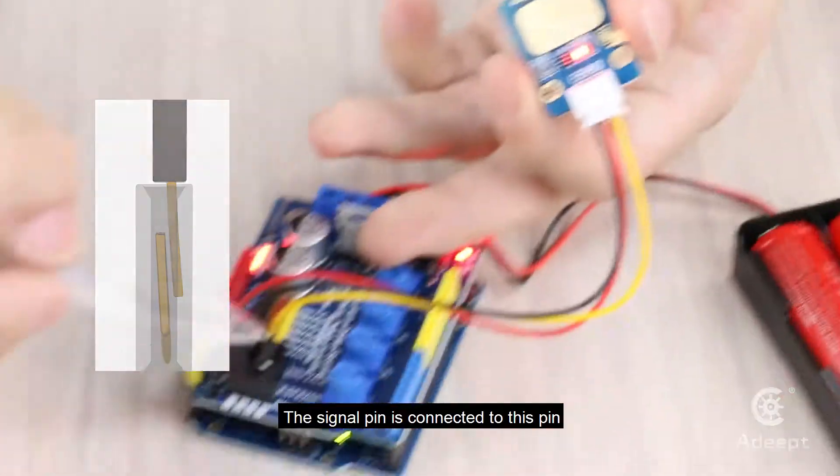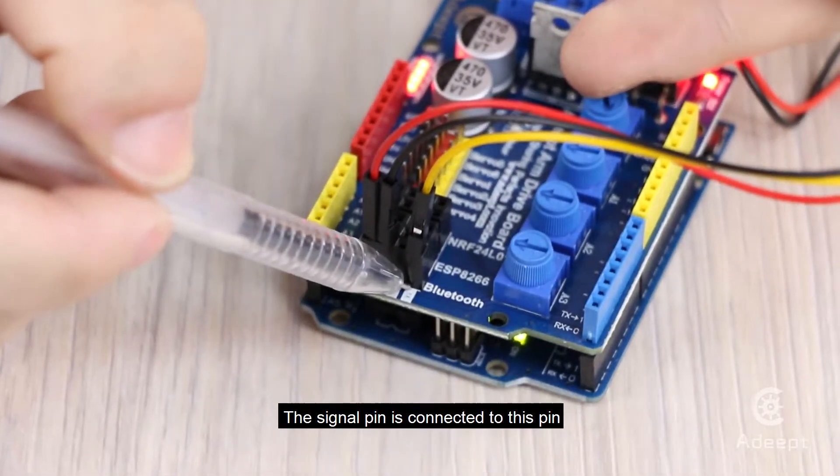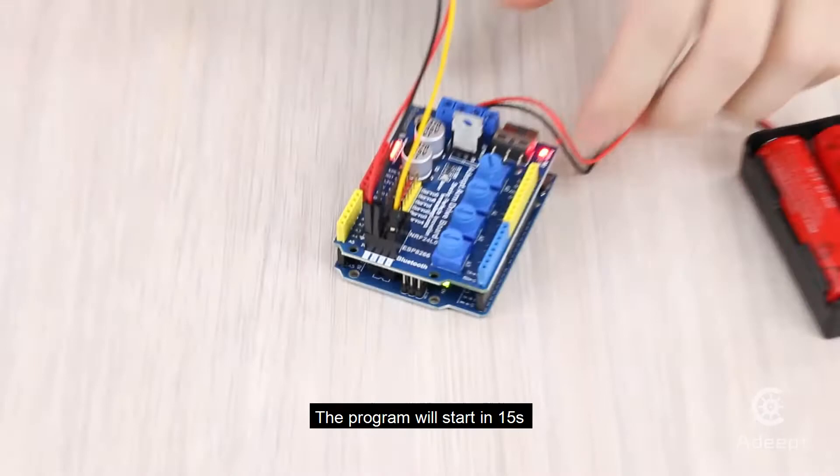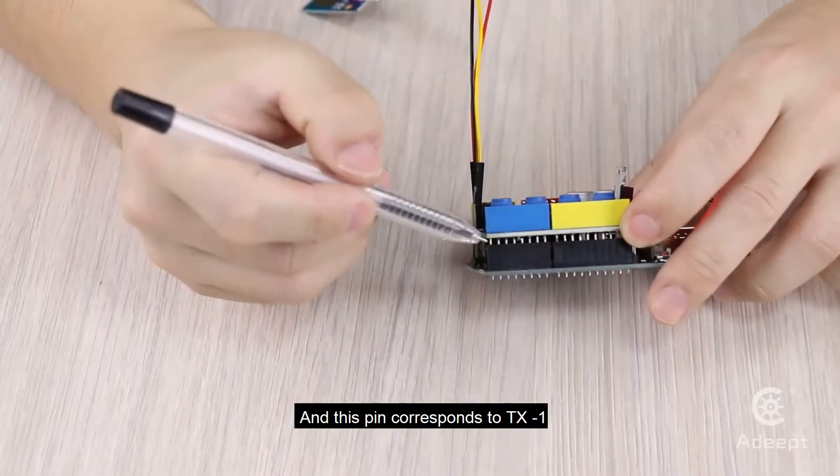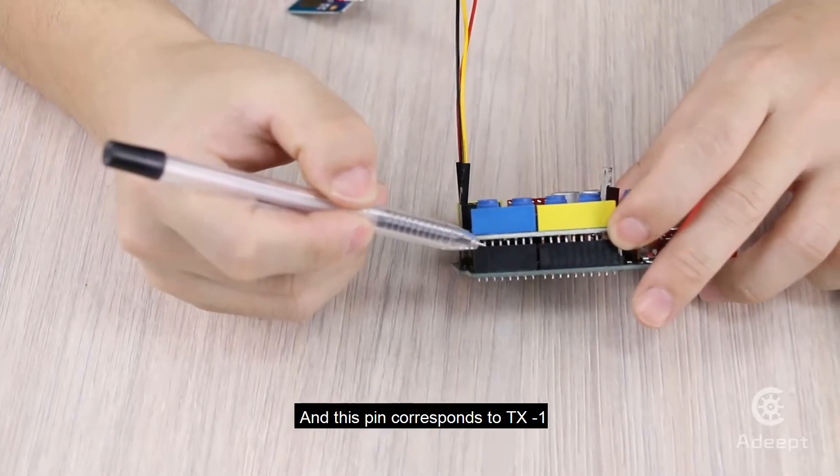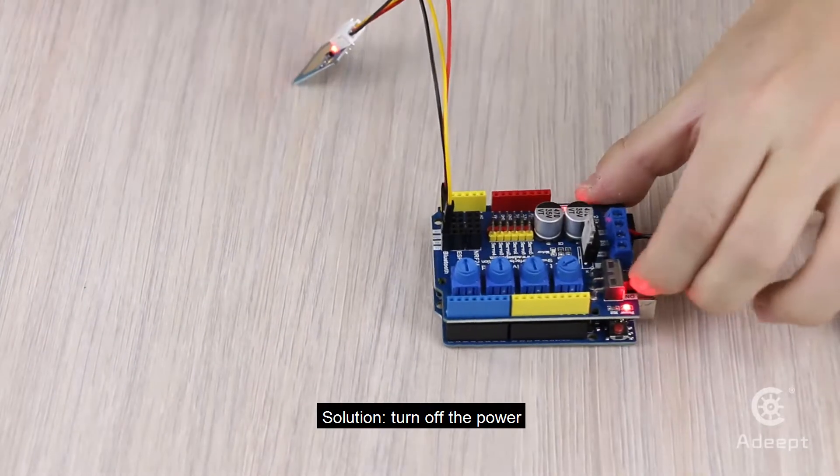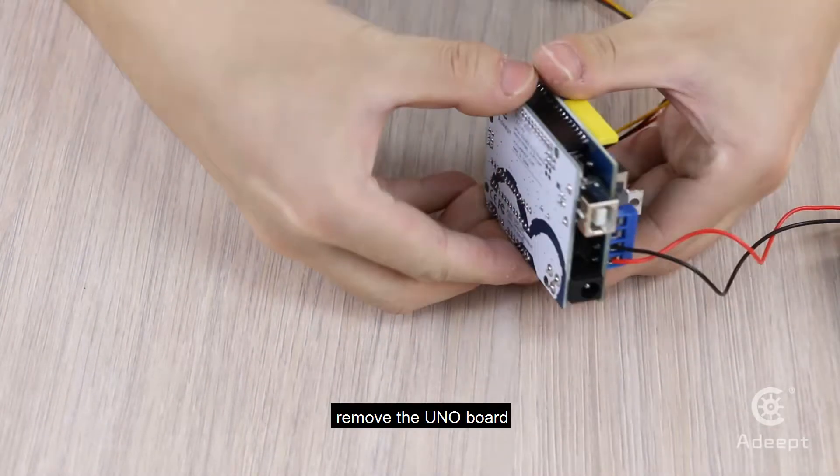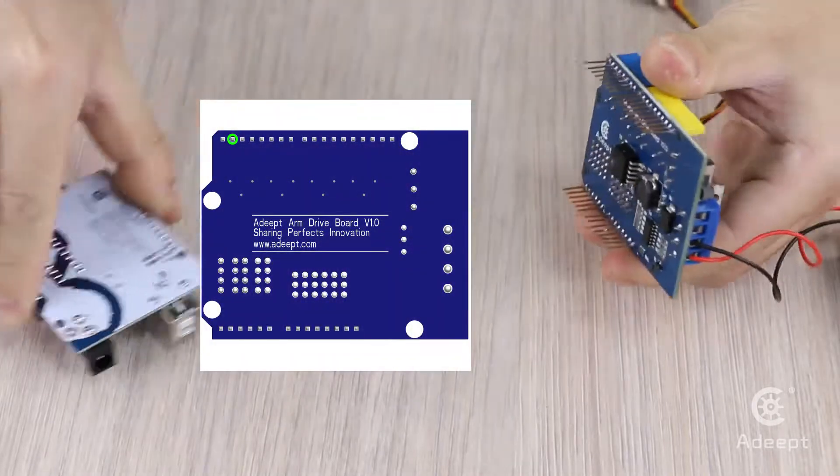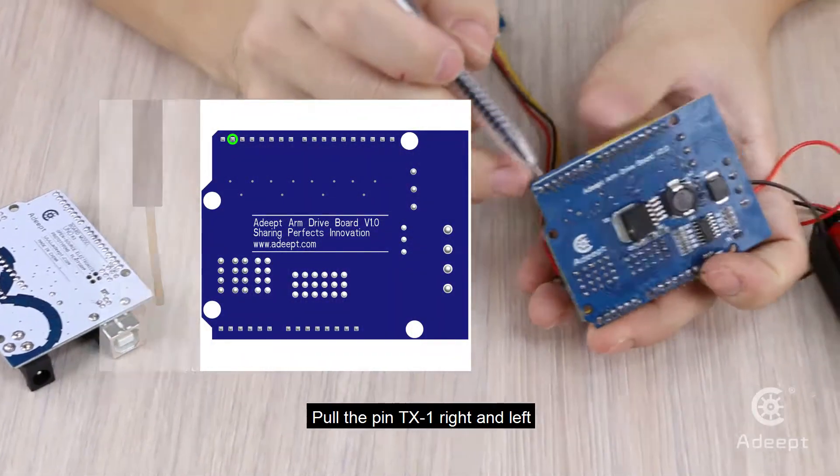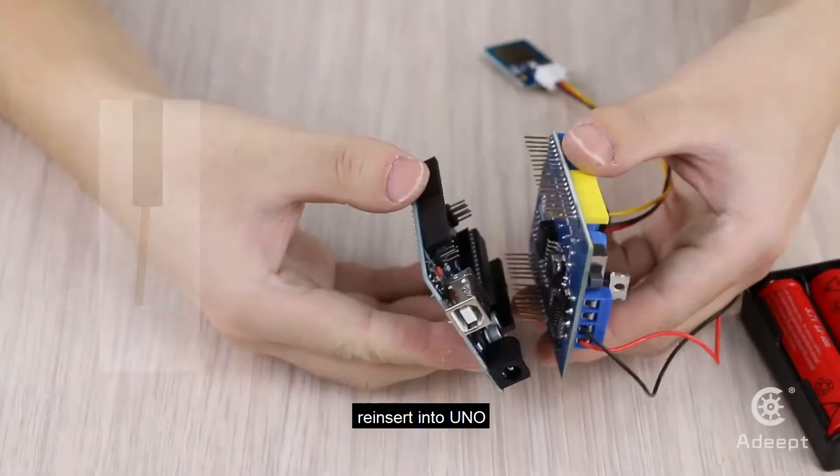The signal pin is connected to this pin. The program will start in 15 seconds, and this pin corresponds to TX1. Solution: Turn off the power, remove the UNO board, pull the pin TX1 right and left, and reinsert into the UNO.